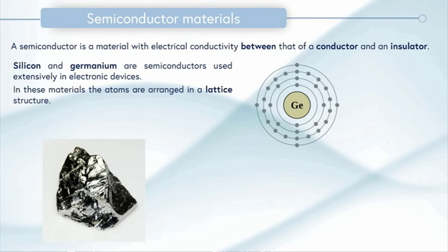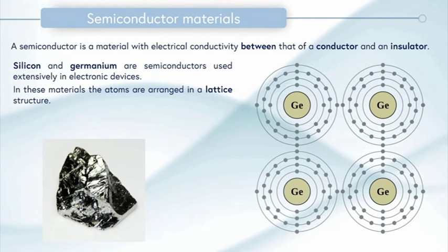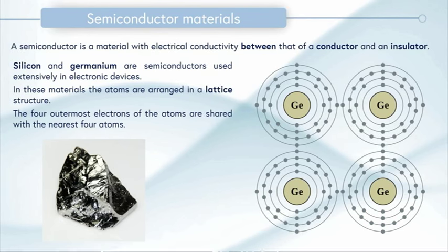In semiconductors the atoms are arranged in a lattice structure. We're going to add some extra germanium and here's our lattice. The important thing with semiconductors is that the four outermost electrons of the atoms are shared with the nearest four atoms. We can see here are our outer electrons and these are going to be shared. This means that overall the material is balanced.